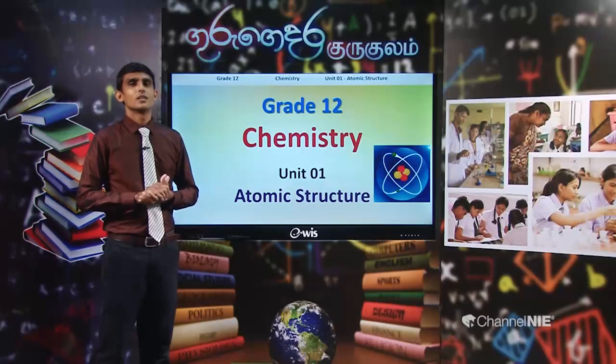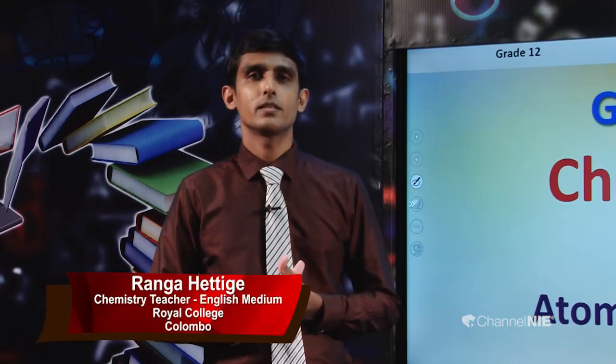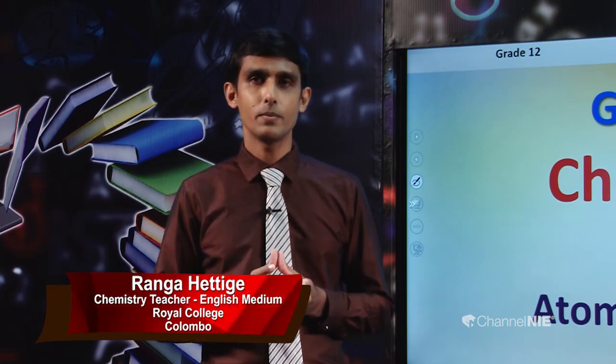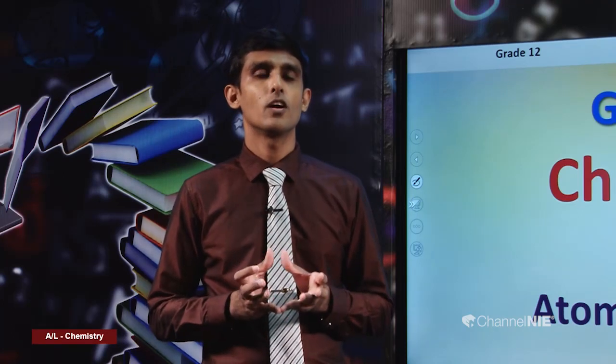Hello students. Today I am going to explain another important topic of the first unit of the Advanced Level Chemistry Syllabus. During the last lesson we discussed about the periodic table, the way how the modern periodic table was constructed, and we identified groups, periods, blocks of the periodic table and the relationship between the electron configuration and the position of the element in the periodic table.